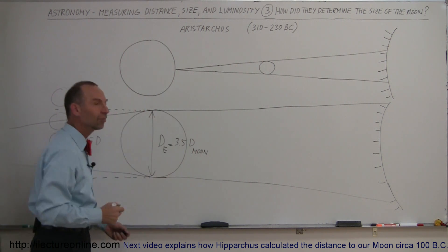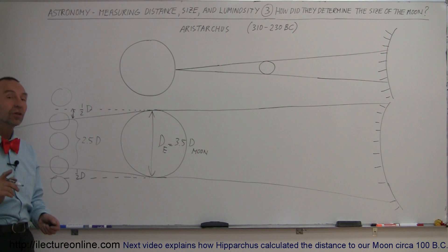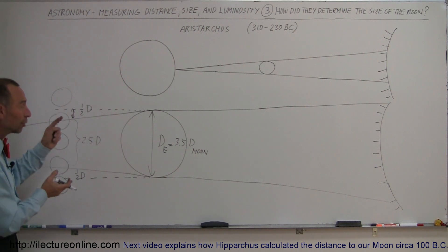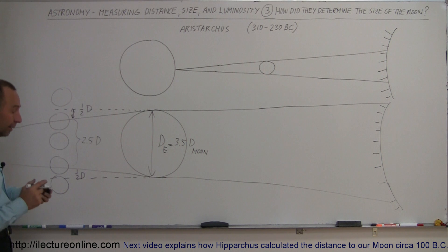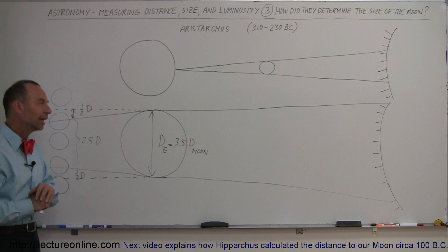So diameter wise, they figured out back then, more than 2,000 years ago, that the Earth was about three and a half times the diameter of the moon. And from that information, eventually they also figured out how far the moon was. So we'll get into that in another video.